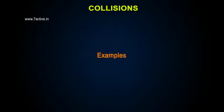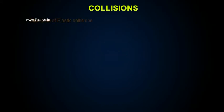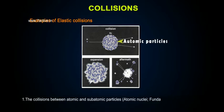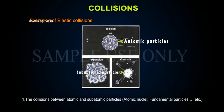Let us see the examples of elastic collisions. Examples of elastic collisions: 1. The collisions between atomic and subatomic particles — atomic nuclei, fundamental particles, etc.